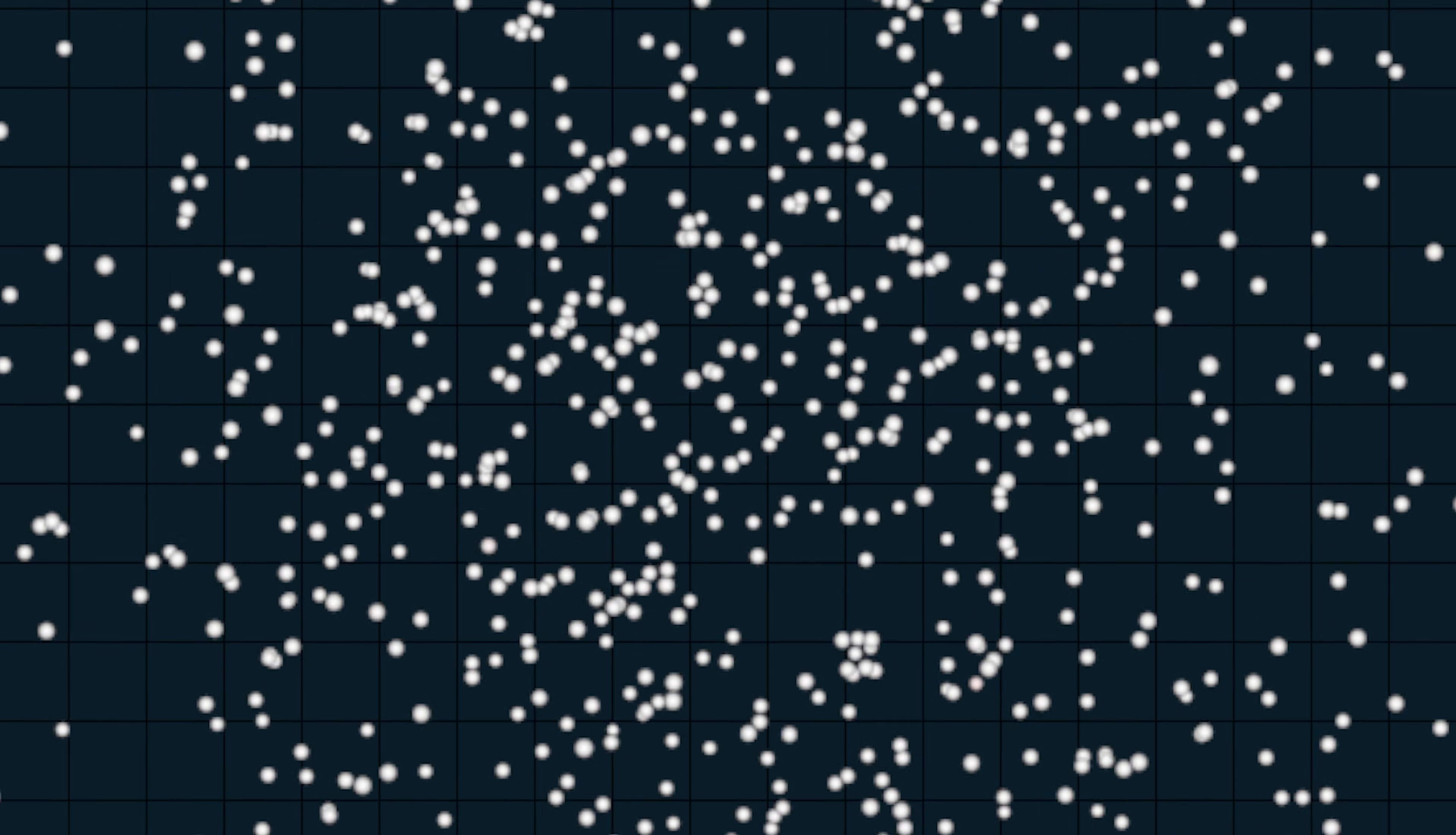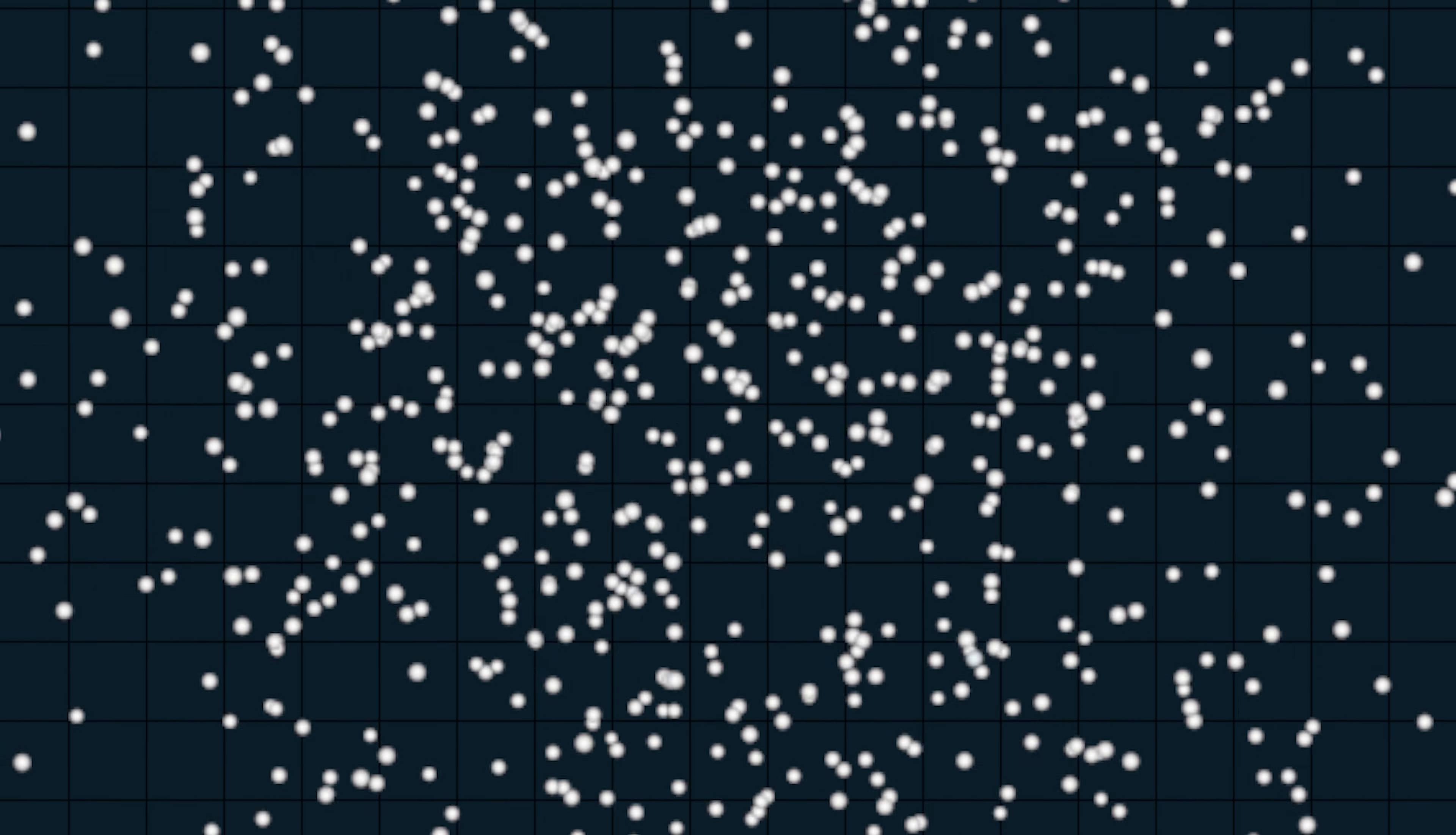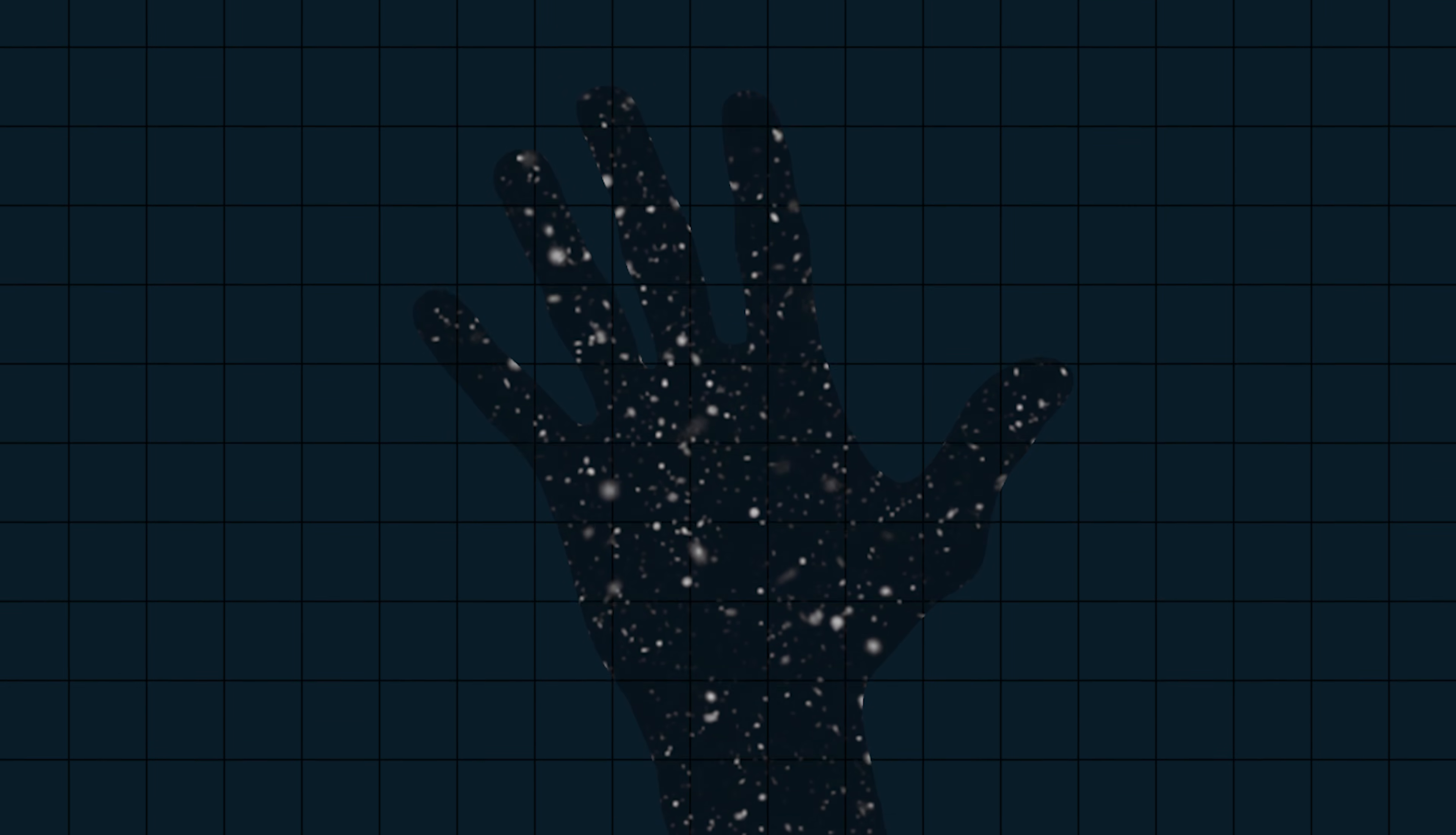During a supernova explosion, its elements are dispersed throughout the universe, which means that all of its stardust eventually collects, creating other heavenly bodies like Earth. So some of the material that makes us up is as old as the universe itself.